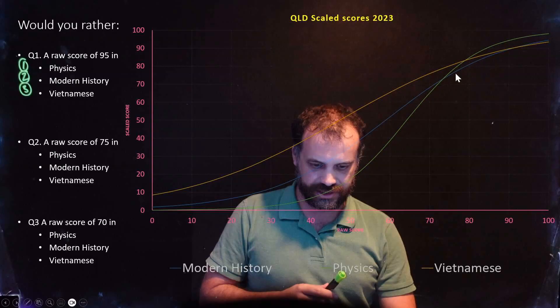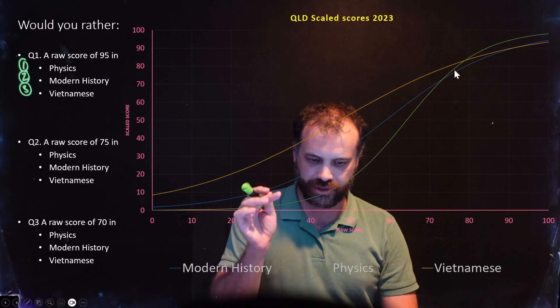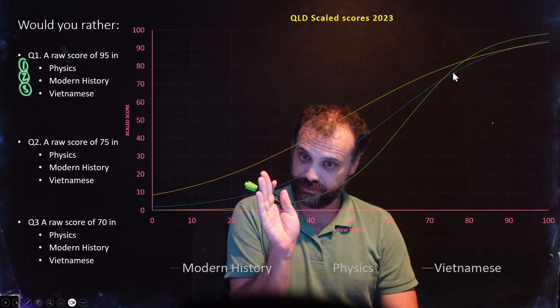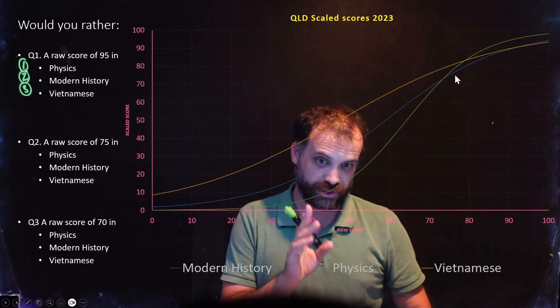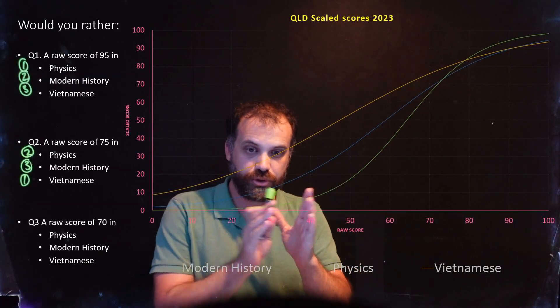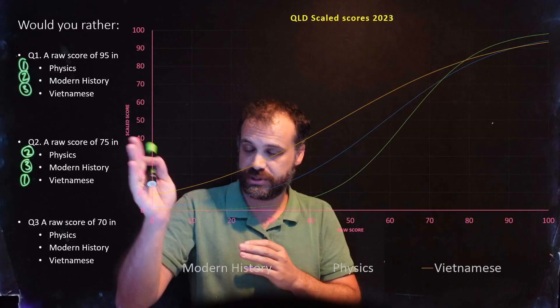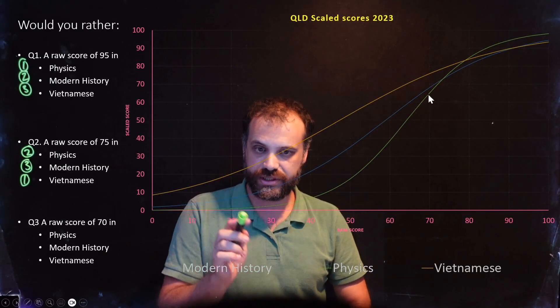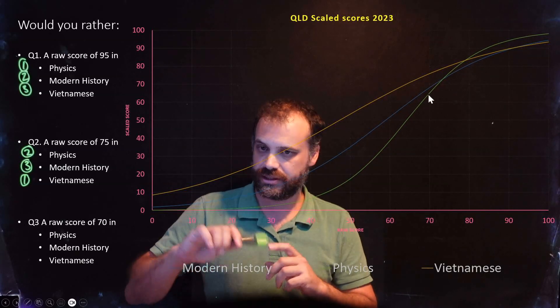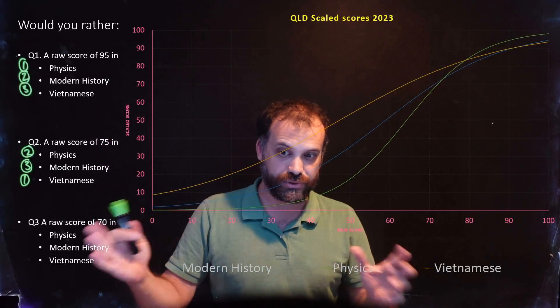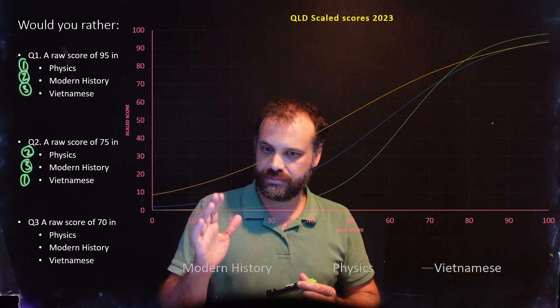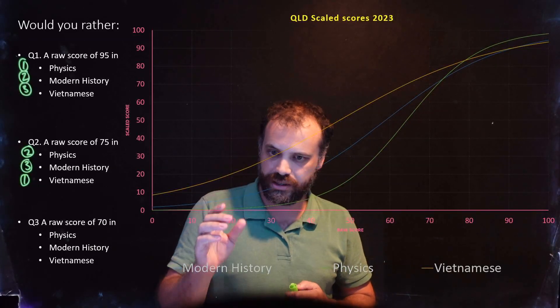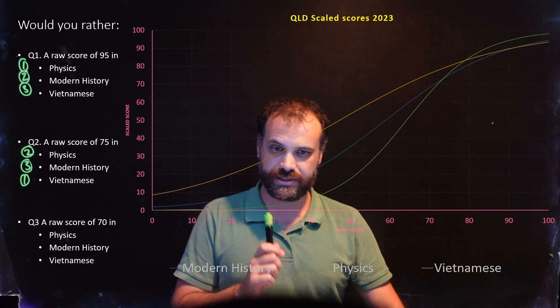And then I'm just moving five points over, just from 75 down to 70. Now, all of a sudden, physics, what a fall from grace. Now they're number three in our list. Vietnamese, now number one. And modern history, back into second place.